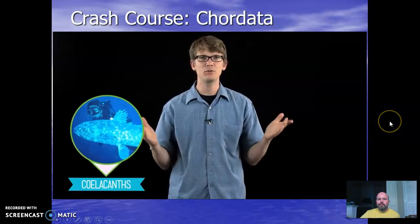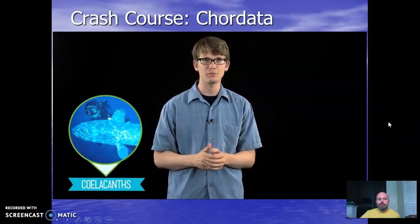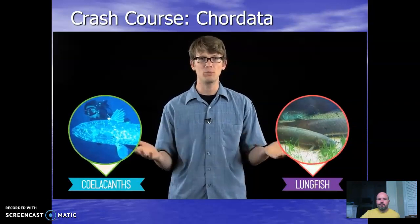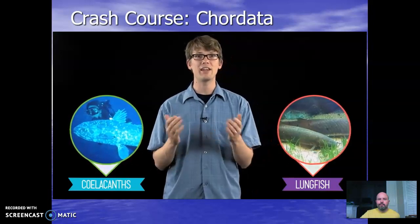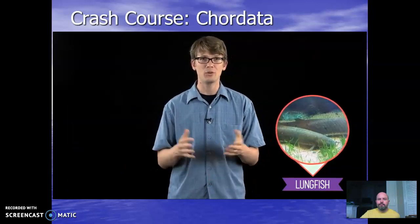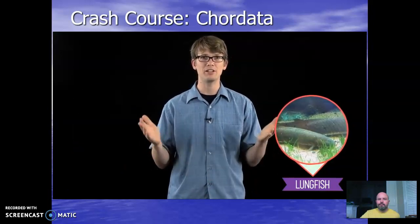Lobe-fins include the coelacanths, which consist of one living species; lungfish, which gulp air into their lungs; and tetrapods, which have adapted to land with four limbs. Even though land animals are clearly not fish, since tetrapods evolved from bony fish, they are filed under this group.